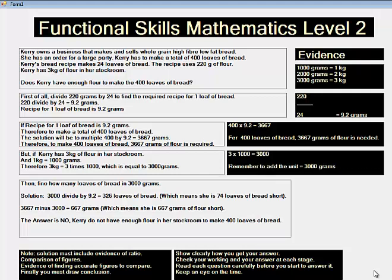But, if Carrie has 3 kilograms of flour in her stockroom, and 1 kilogram equals 1,000 grams, therefore 3 kilograms equals 3 times 1,000, which is equal to 3,000 grams.